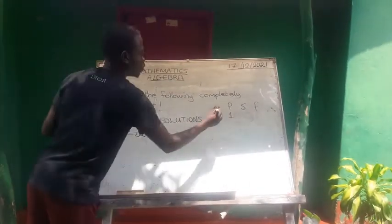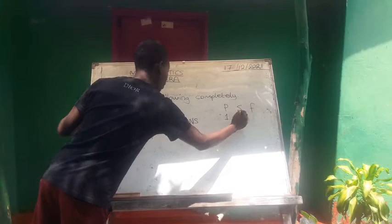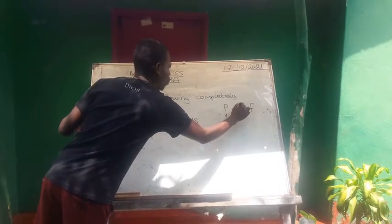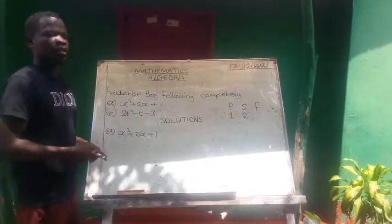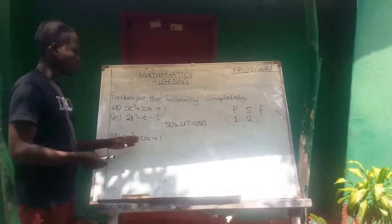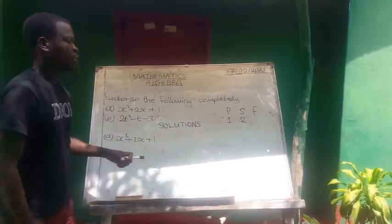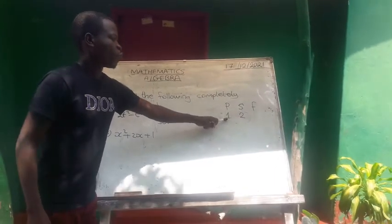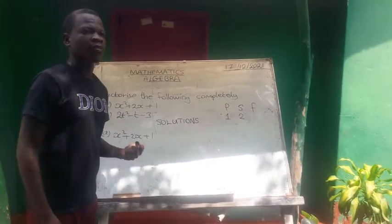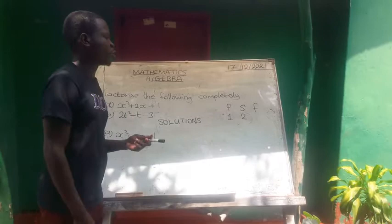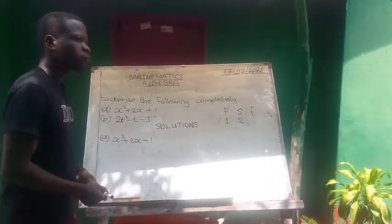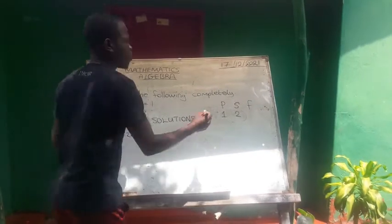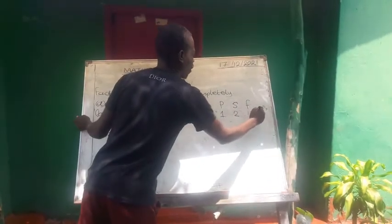Then sum is going to be 2. Then factors, you have to look for two numbers you can multiply to give you the product of 1. The same numbers, if you add them, they should give you the sum of 2. So the factors are going to be 1, 1.